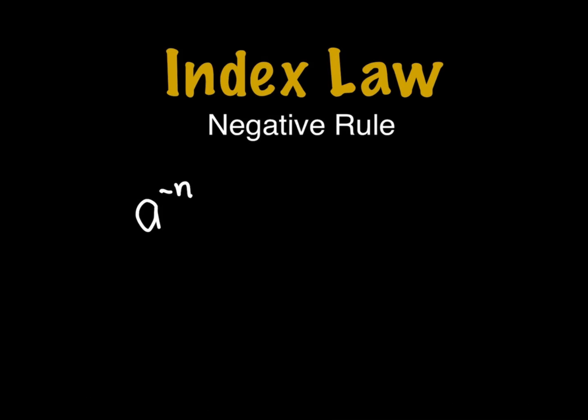To simplify the index law under the negative rule, the general form is a raised to negative n is equal to 1 over a raised to the n.